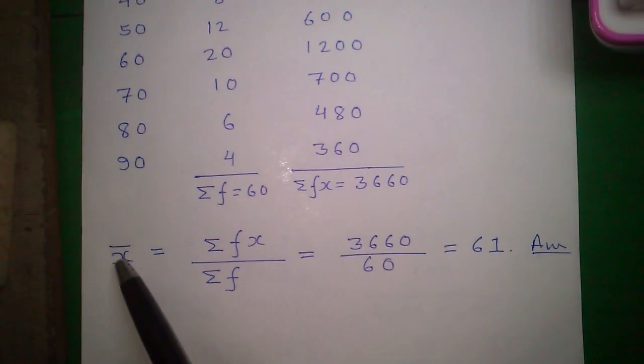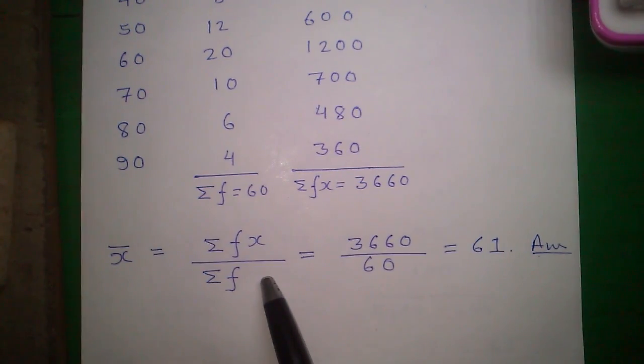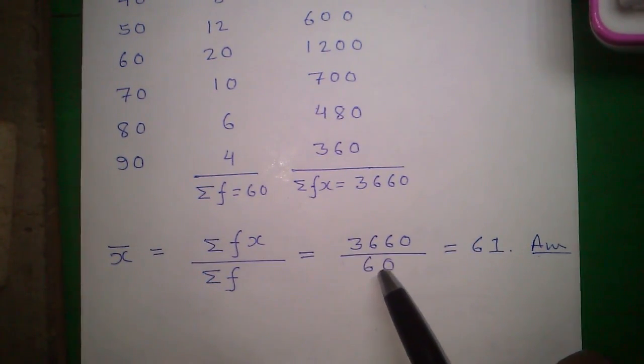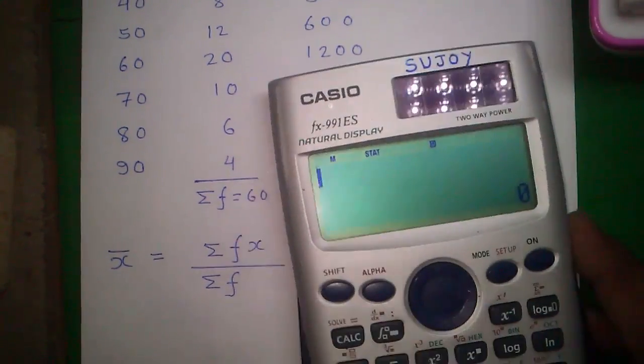Next, mean of X or X bar is given by sum of FX divided by sum of F, which is 3660 divided by 60 equal to 61. This was using normal method, and this is the shortcut method.